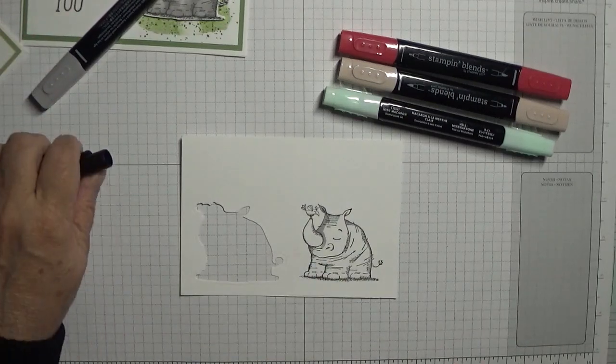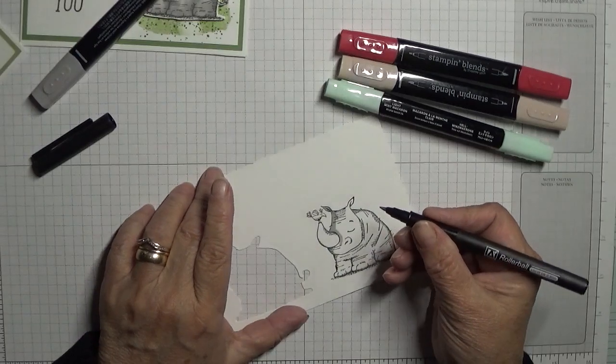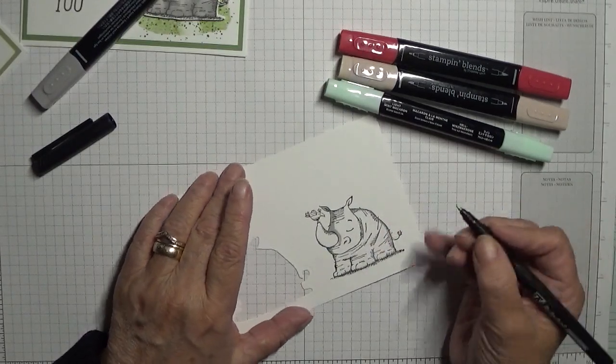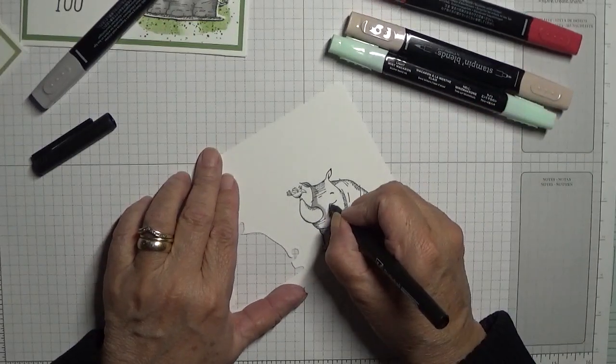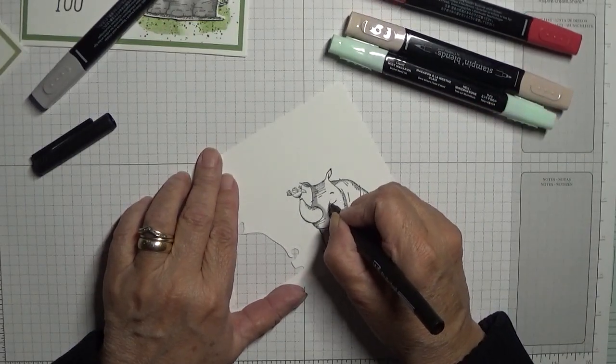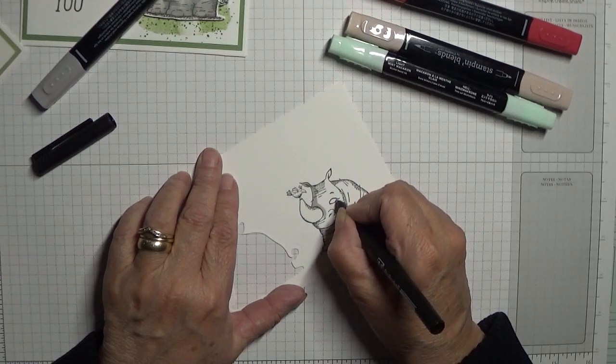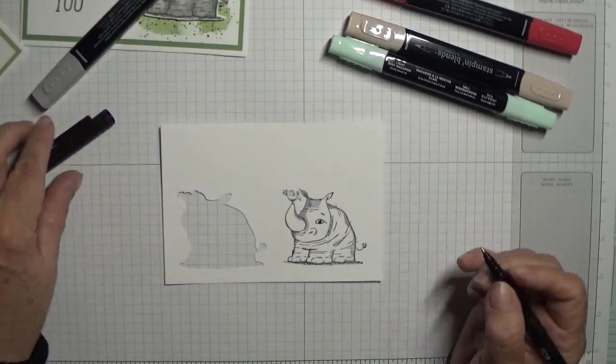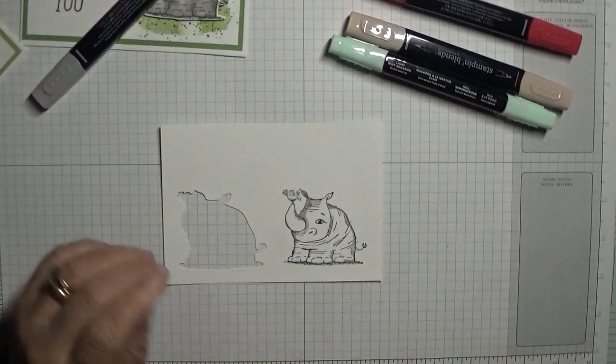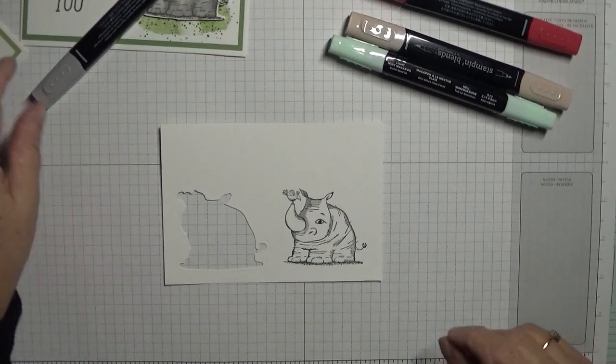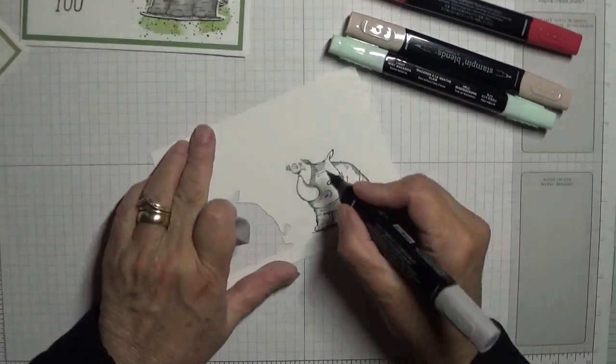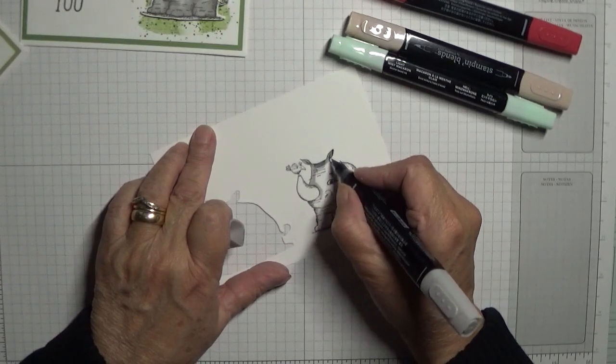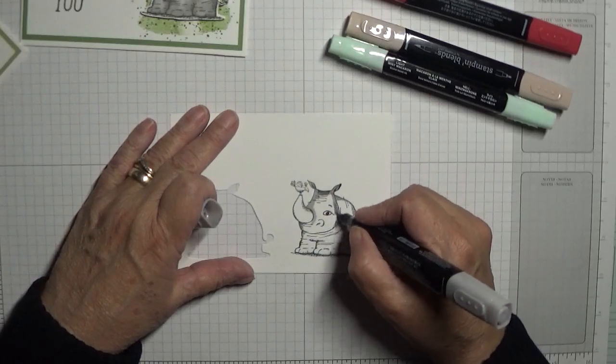This is a rollerball pen 0.5mm. I'm going to open his eyes. I do like an open eye. I'm going to continue to color him in. The thing about Stampin' Up stamps, they do actually do the shading for you.